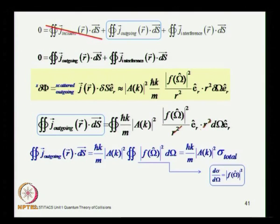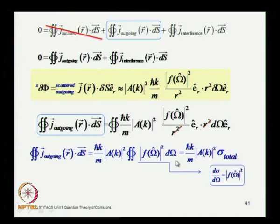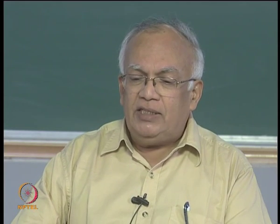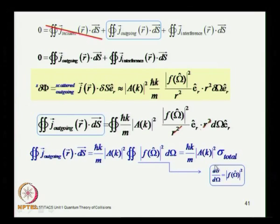The scattering amplitude squared is the differential cross section dσ/dΩ. Integrating over all angles — θ from 0 to π, φ from 0 to 2π — you necessarily get the total cross section, because you are integrating dσ/dΩ · dΩ.